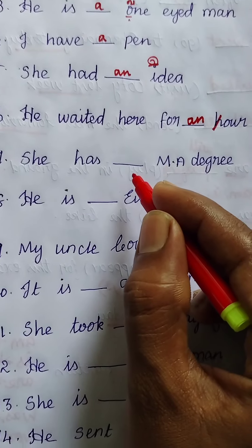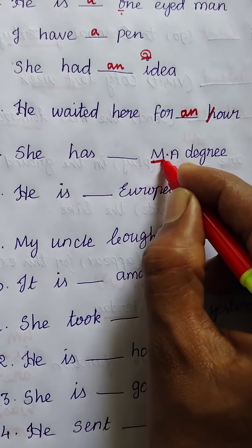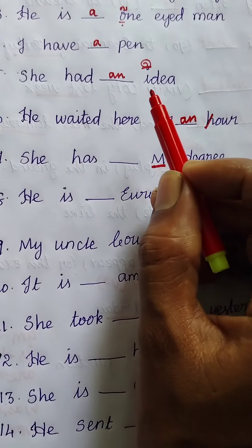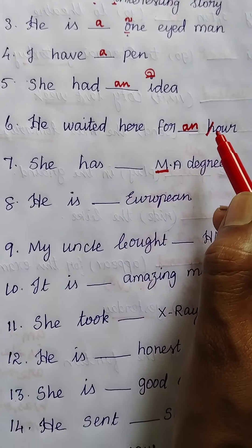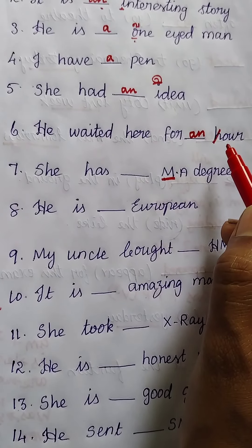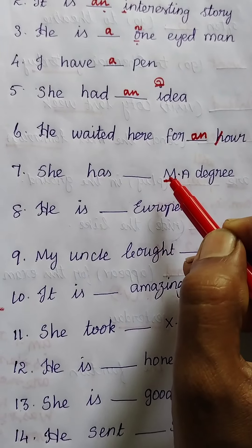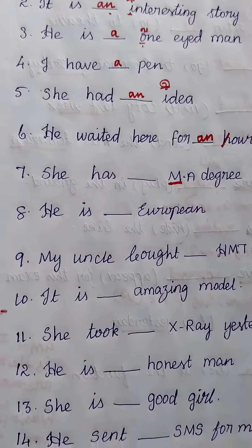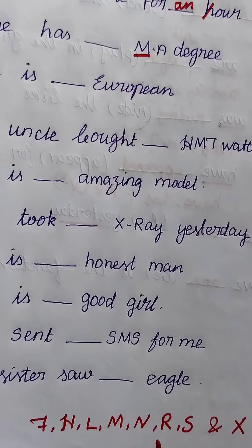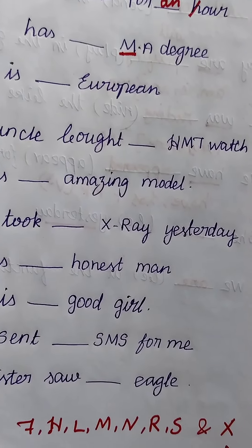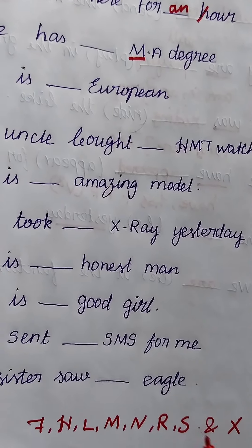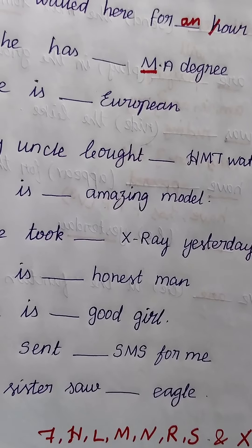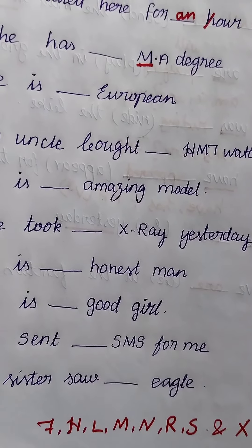Next: 'She has ___ MA degree.' The letters M and A are written in capitals, so it is an abbreviation. There is a third rule: when we have abbreviations starting with certain 8 consonant letters — F, H, L, M, N, R, S, and X — we use 'an'. Only check the first letter of the abbreviation. For 'LKG', the first letter is L, which is in that list, and its sound is a vowel sound, so the answer is 'an'.